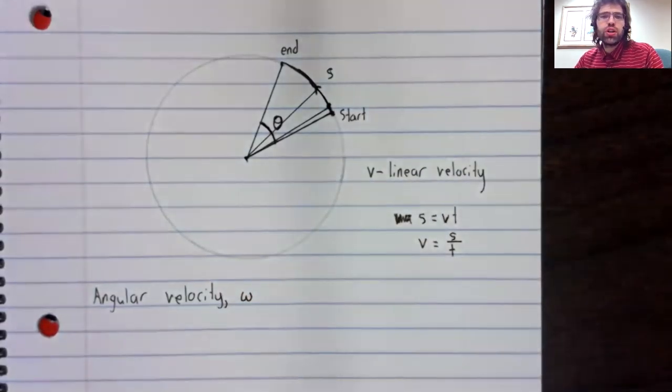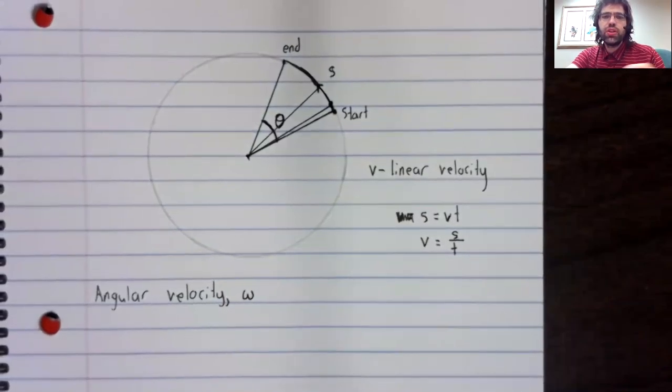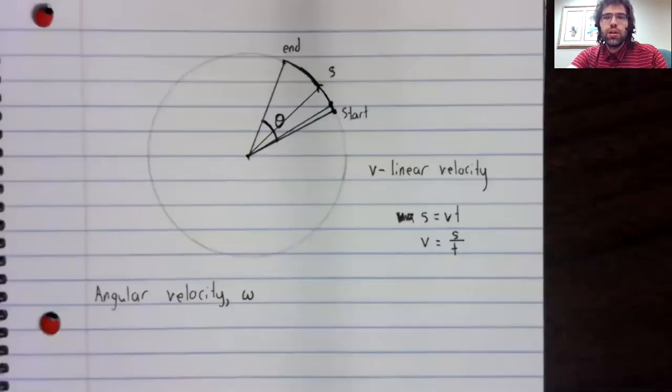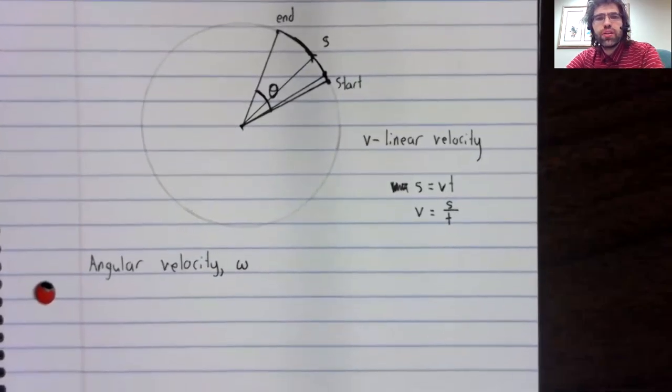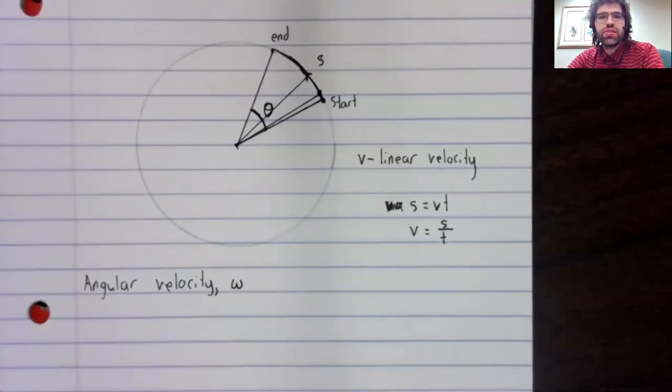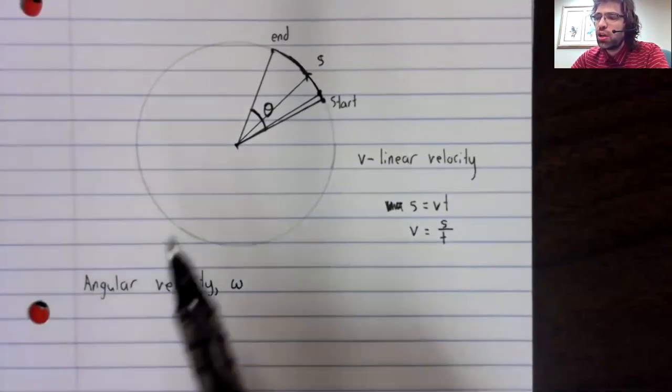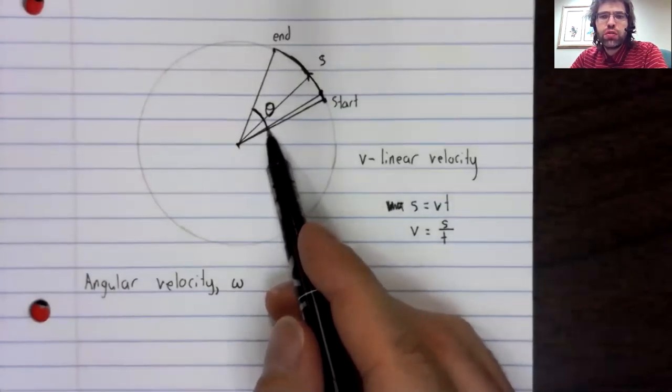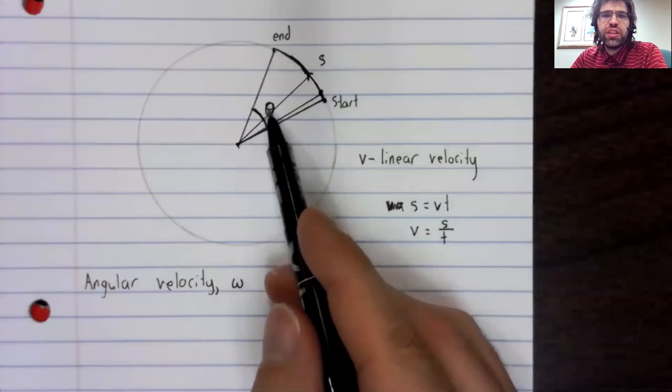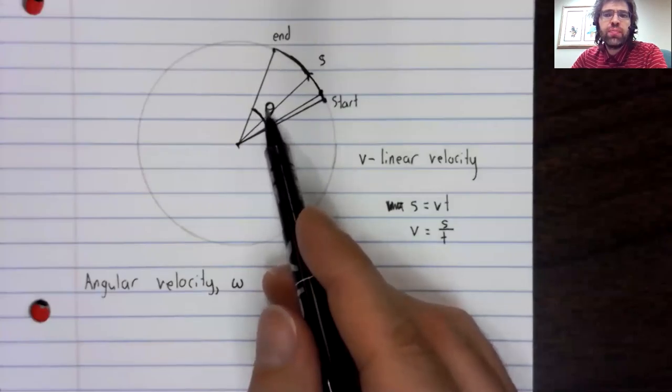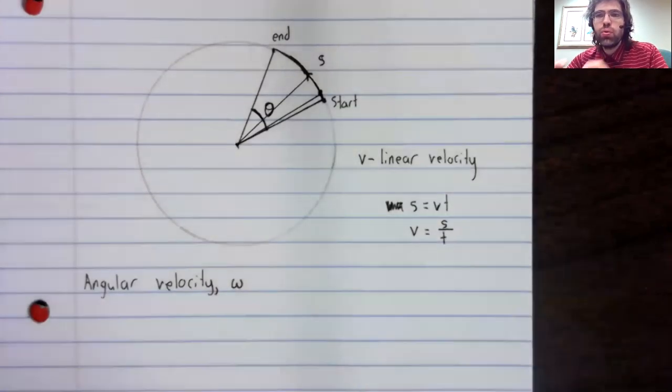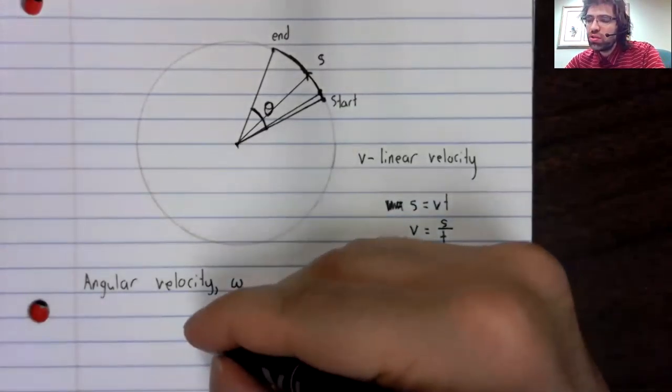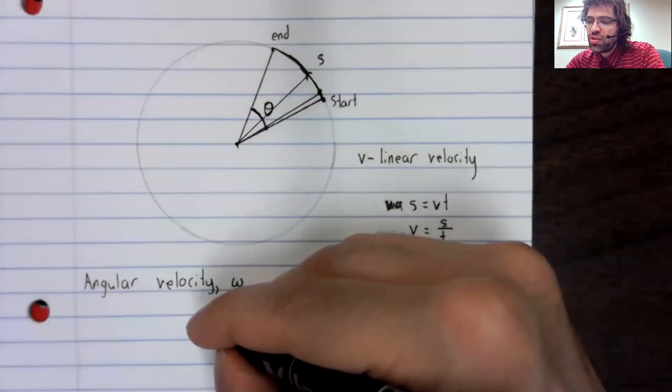Which we'll denote with a kind of stylized W. We'll start with the standard distance formula. This angle was initially zero. It increased to theta. So the distance the angle travels is theta.